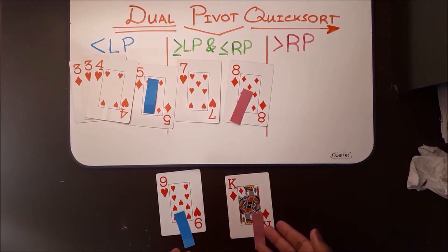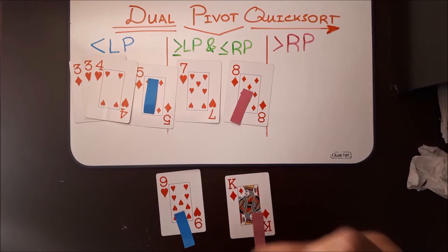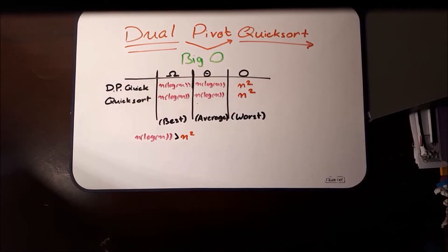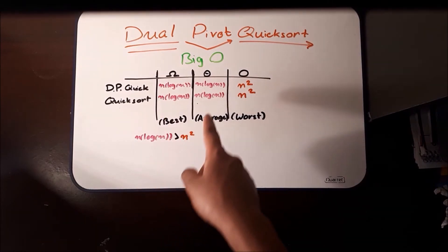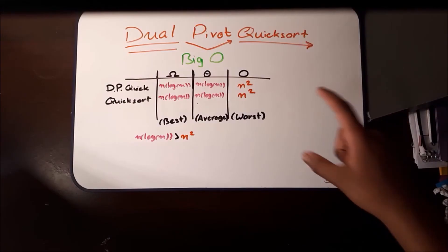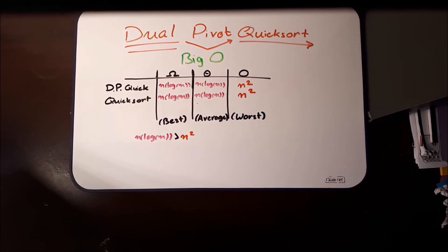Now we have successfully sorted our array. Let's see our final sorted array. Now you have learned how to successfully sort any array using Dual Pivot Quicksort. For Big O notation, we're gonna be comparing Dual Pivot Quicksort to Quicksort. The best, average, and worst case are both the same: best case being O(n log n), average case being O(n log n), and worst case being O(n²). But what sets Dual Pivot Quicksort apart is that its constant makes it marginally better than Quicksort. Although the worst case is the same for both, Dual Pivot Quicksort will only reach O(n²) at a larger set of data compared to Quicksort.